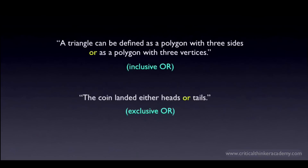The or on top is called an inclusive or — it includes the case where both disjuncts can be true. The or on the bottom is called an exclusive or — it excludes the case where both disjuncts can be true. When examining arguments that use or, you need to know what kind of or you're dealing with, because the logic is different.